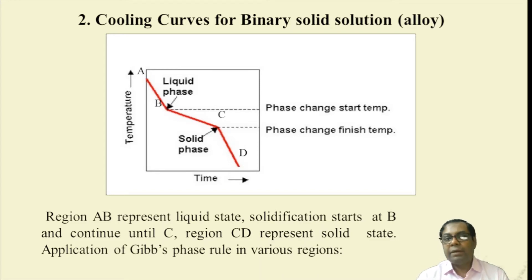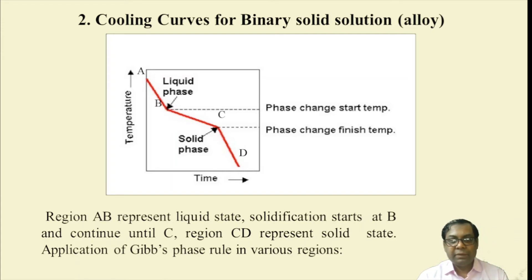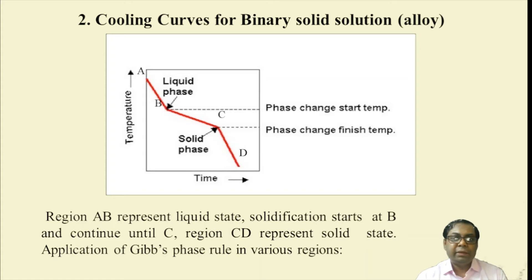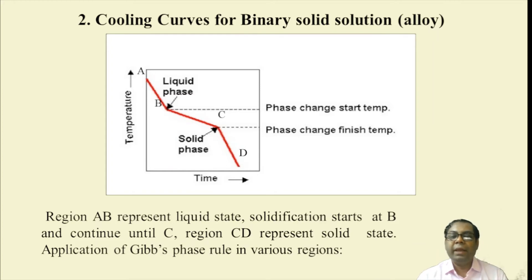For a more practical metallic or alloy case, from point A to B there is a uniform reduction of temperature. From point B to C, the phase change occurs not at a constant temperature; point B is the phase-change start temperature and point C is the phase-change finish temperature. After point C, the system is in the solid phase. Region AB represents the liquid state, solidification starts at B and continues until C, and region CD represents the solid state.